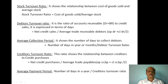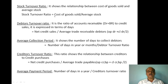Stock Turnover Ratio, also known as Inventory Turnover Ratio, shows the relation between cost of goods sold and average stock. The formula is: Cost of Goods Sold divided by Average Stock. Average stock is calculated as opening stock plus closing stock divided by 2.